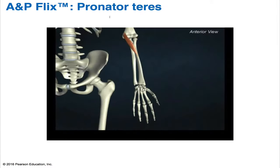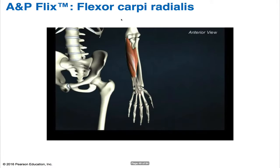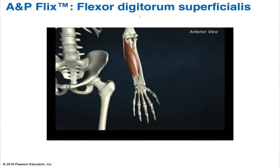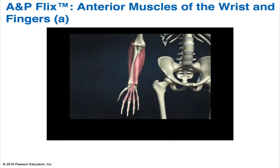Be sure to view the animations for the pronator teres, flexor carpi radialis, flexor carpi ulnaris, flexor digitorum superficialis, and the anterior muscles of the wrists and fingers. You can find them on YouTube, the Pearson website, or the DVD that came with your book.